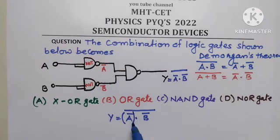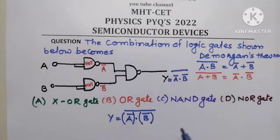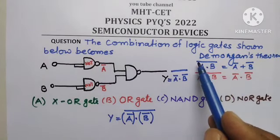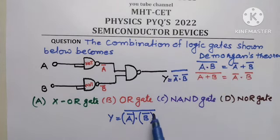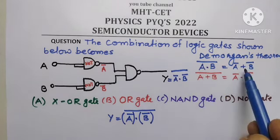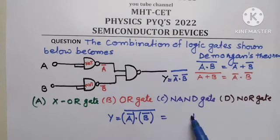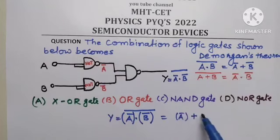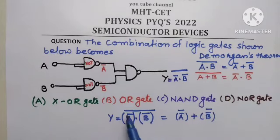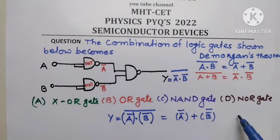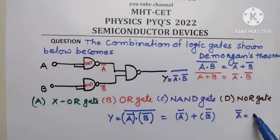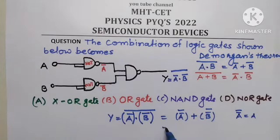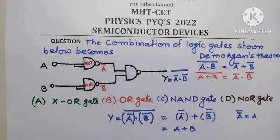We can make use of De Morgan's theorem here. Complement of product is equal to sum of their complements. So this is equal to A-bar complement plus B-bar complement. And remember, the complement of a complement is equal to the variable itself. So this simplifies to A plus B — double complement of A is A, double complement of B is B.